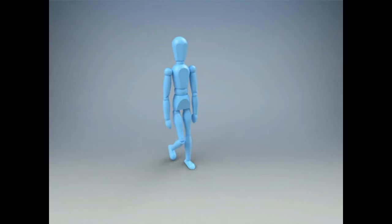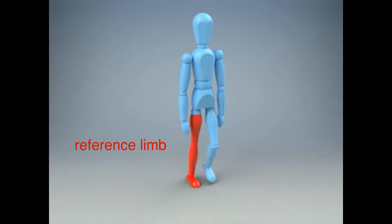To make gait analysis easy, we only look at one leg at any given time. We call this the reference limb, which I've colored here in red.